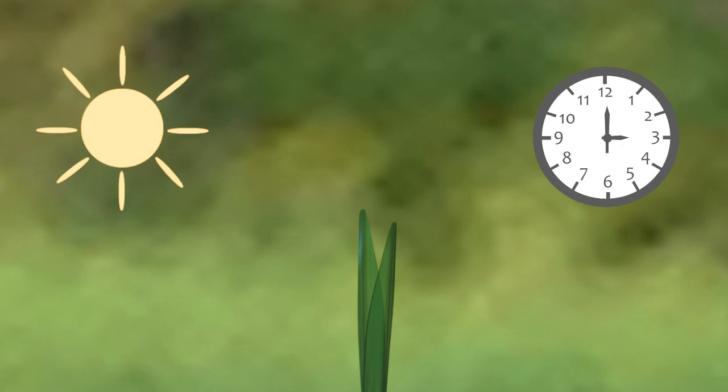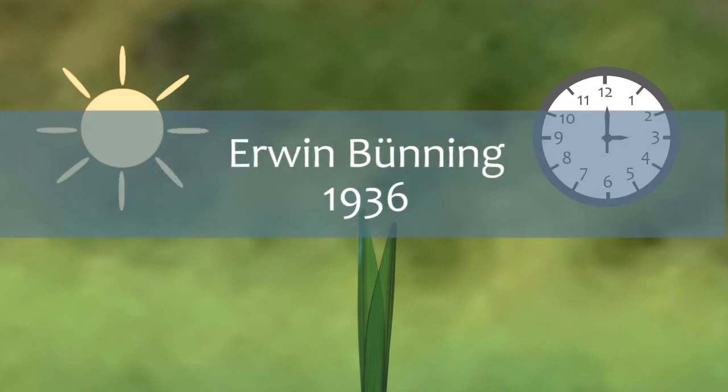It's a molecular signal that is provided at a specific time of day by the clock. To be fair, the involvement of an internal timekeeper in photoperiodic flowering was first anticipated by Erwin Bunning 30 years earlier, in 1936. But the scientific community was not prepared for such a brilliant idea.